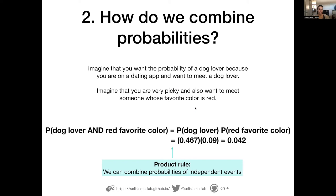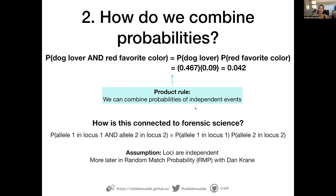The product rule is a shortcut that allows us to calculate probabilities of combined events simply by multiplying, but it does not work unless the events are independent. In forensic science, we're interested in different alleles in DNA — we want to know the probability that someone has one allele at a specific locus and another allele at another locus. We use the product rule to multiply them, and the main assumption is that the loci are independent, meaning having one allele does not make it more likely to have the second allele.